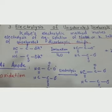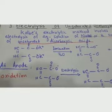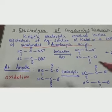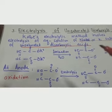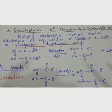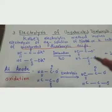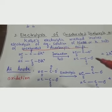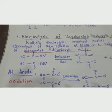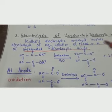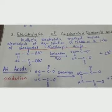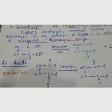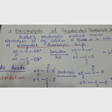You should remember this method by comparison. For alkanes, we used the salt of monocarboxylic acid. For alkenes, we used the salt of dicarboxylic acid. And here, for alkynes, we use the salt of unsaturated dicarboxylic acid and carry out the electrolysis process.